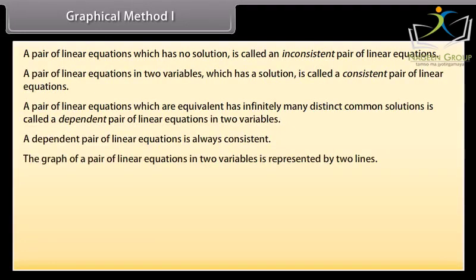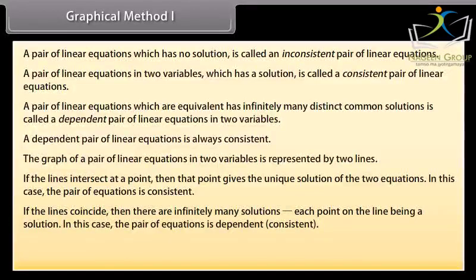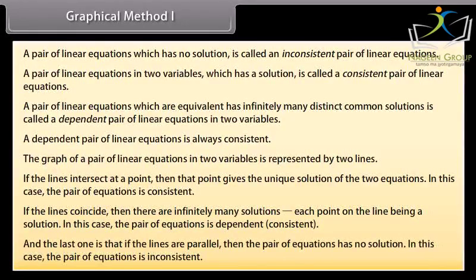The graph of a pair of linear equations in two variables is represented by two lines. If the lines intersect at a point, then that point gives the unique solution — the pair of equations is consistent. If the lines coincide, then there are infinitely many solutions, each point on the line being a solution — the pair is dependent and consistent. If the lines are parallel, then the pair of equations has no solution — it is inconsistent.